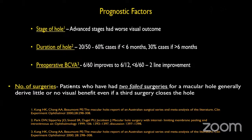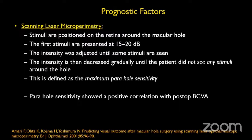Other prognostic factors: stage of hole — the more advanced the stage, the worse the visual outcome. Duration: holes less than 6 months duration with vision of 20/50 have 60% chance of better visual outcome; more than 6 months, only 30%. Pre-operative BCVA of 6/60 can generally improve to around 6/12. Number of surgeries: patients who have had two failed surgeries generally derive little or no visual benefit even if a third surgery closes the hole. Lastly, scanning laser microperimetry — stimuli are positioned around the macular hole, adjusted from 15-20 decibels, and minimum parahole sensitivity shows a positive correlation with post-operative BCVA.